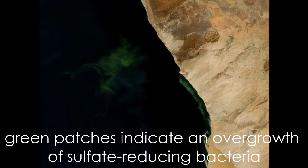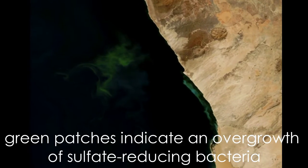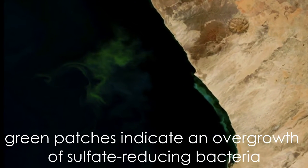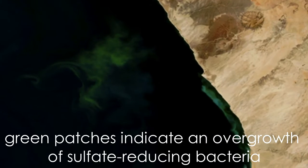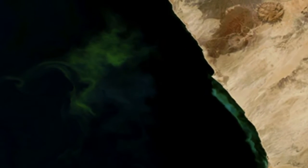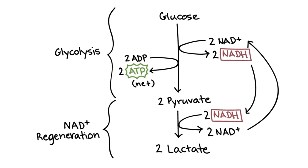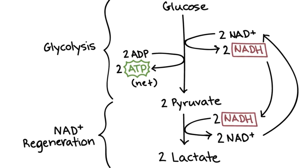Anaerobic respiration is not used only by humans, but also by organisms who live in environments with little levels of oxygen. The reaction happens when glucose gets converted to lactic acid and energy.